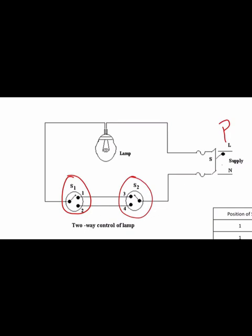The switches have two terminals each representing on and off positions. Between the two switches, we make connections with wires. For example, we take terminals one and three on one side and two and four on the other, so a connection is made between one and three, and another connection between two and four.